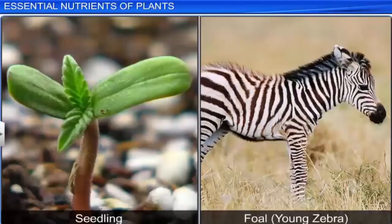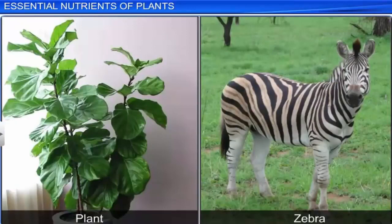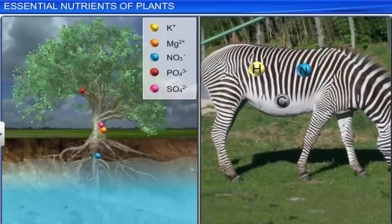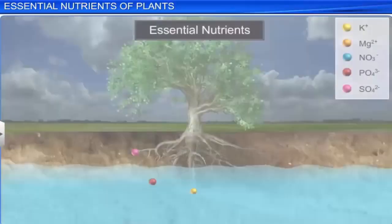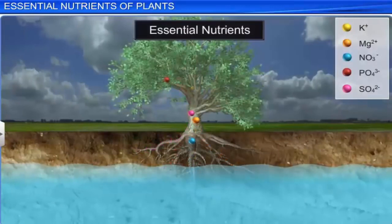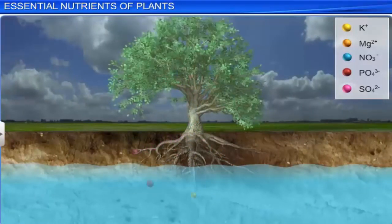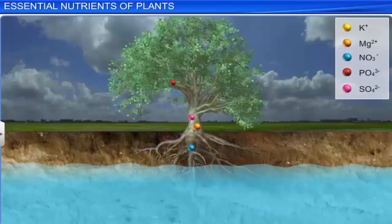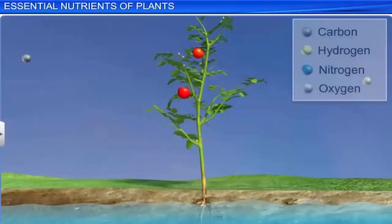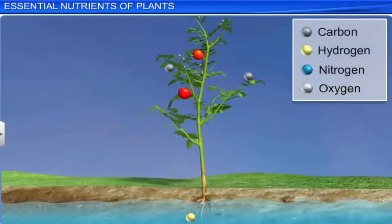Plants and animals require nourishment for growth. This nourishment is provided to them in the form of chemical substances called nutrients. Let us learn about the ones that are essential for the growth of plants. Nourishment is the process of absorption of various mineral ions by the plants for their growth and development. Plants absorb inorganic elements like hydrogen, oxygen, carbon, and nitrogen from air or water.